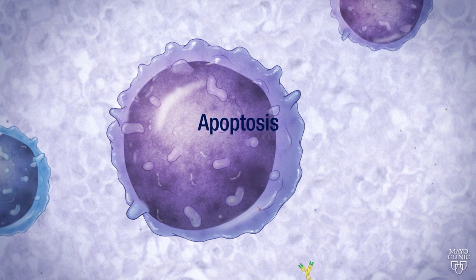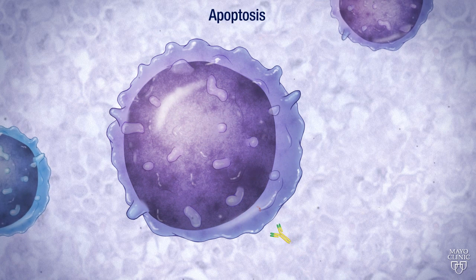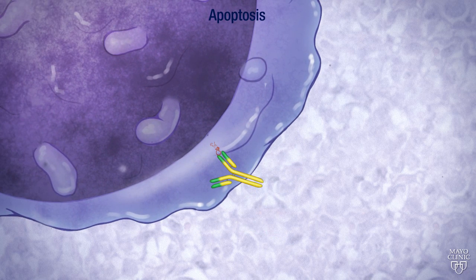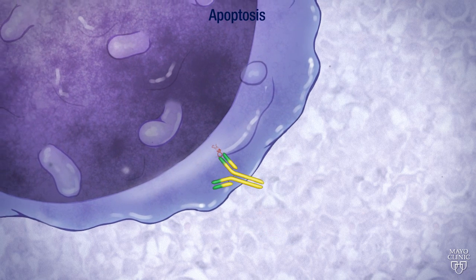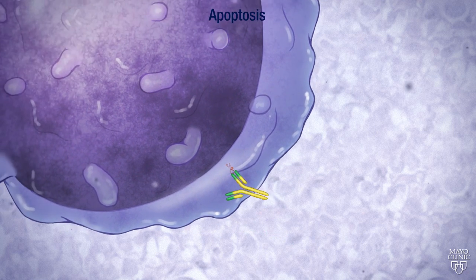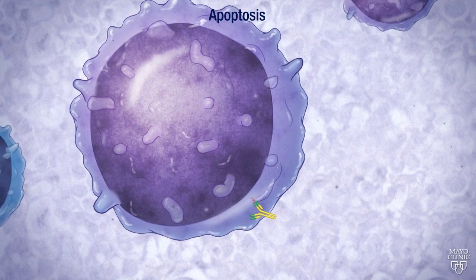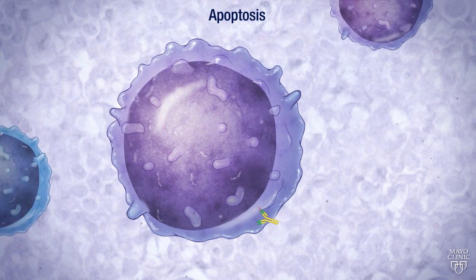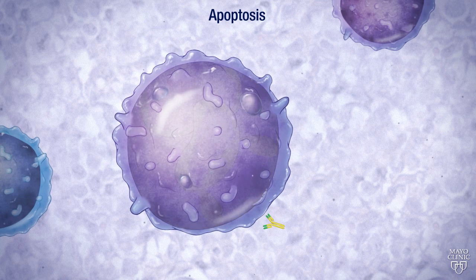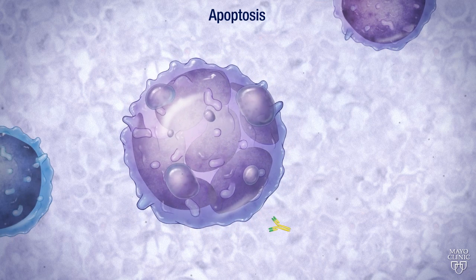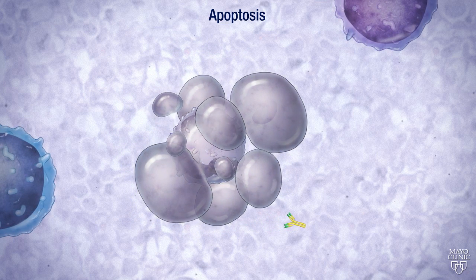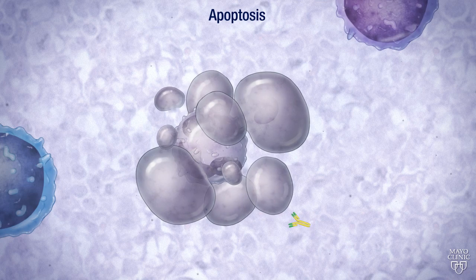Either process results in the death of the B-cell. Apoptosis, or programmed cellular suicide, can also occur from the antibody and antigen complex of Rituxan to CD20. This complex signals the cell to start the process of apoptosis, which includes cell shrinkage, nucleus fragmentation, DNA fragmentation, and finally, cell death.